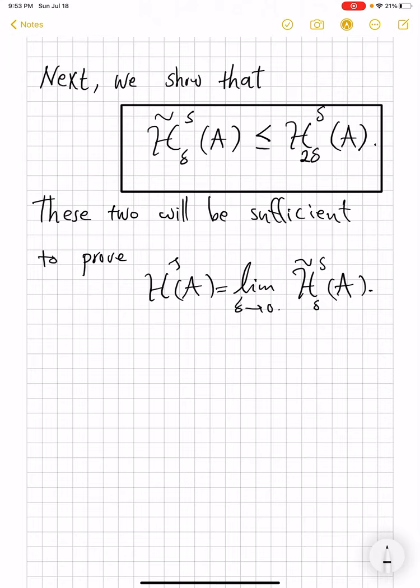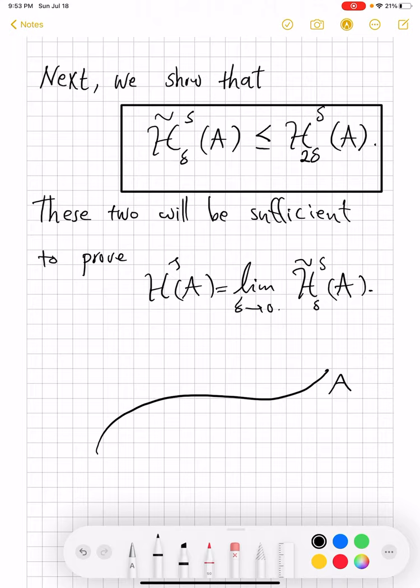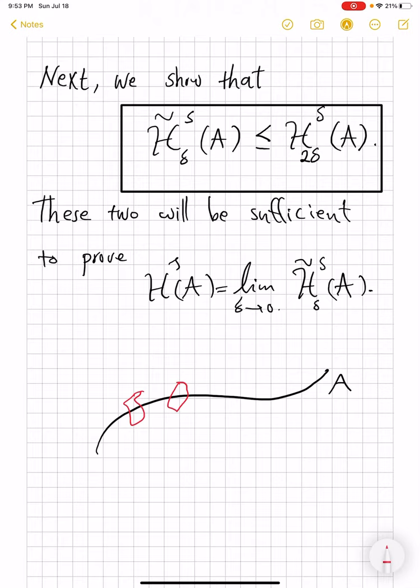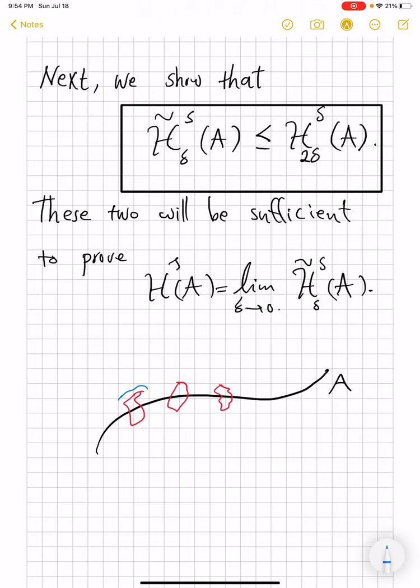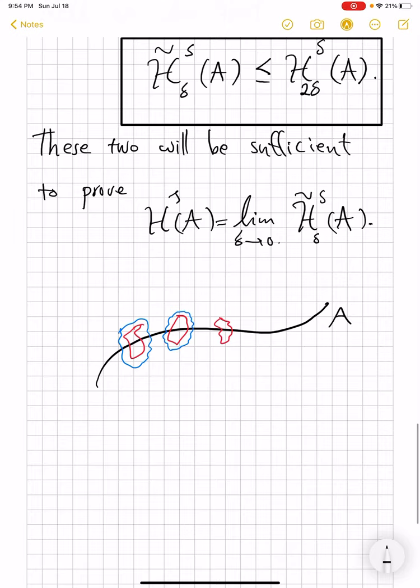And that is where the writing down of the proof usually becomes lengthy and technical. The core idea, of course, is that if you have your set A, and if you have arbitrary coverings, by whatever sets, either closed or open, the idea is that you can always increase a set by a little bit in terms of diameter and contain it in an open set. So every set in your covering can be fattened into an open set.